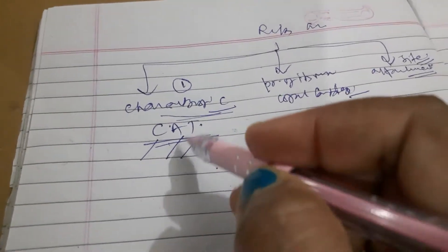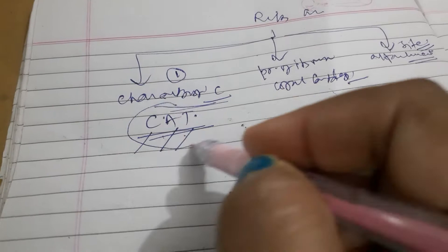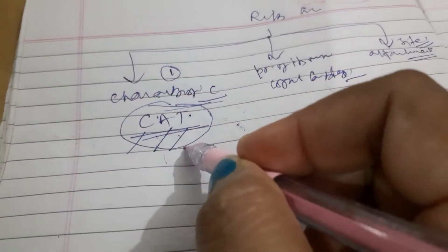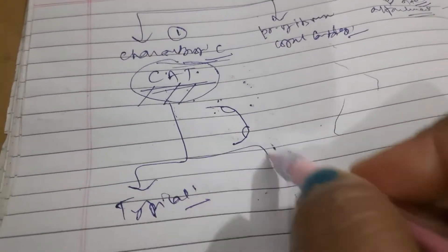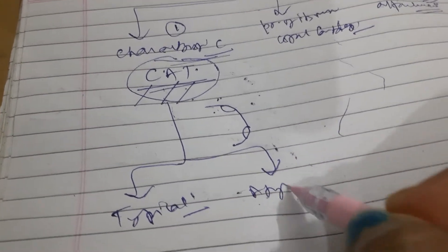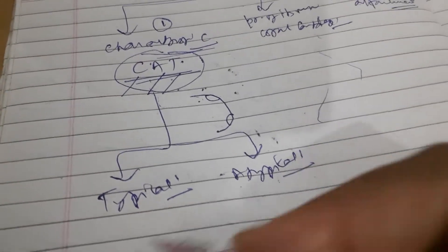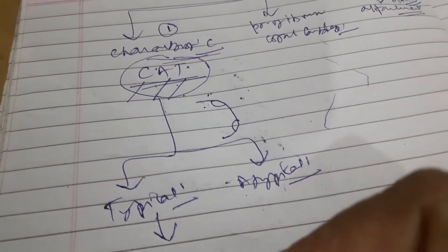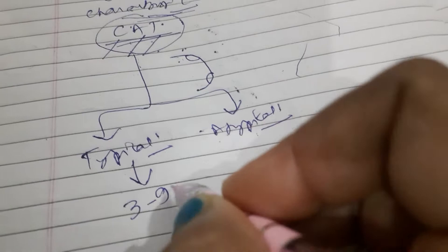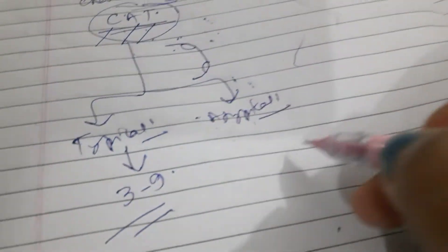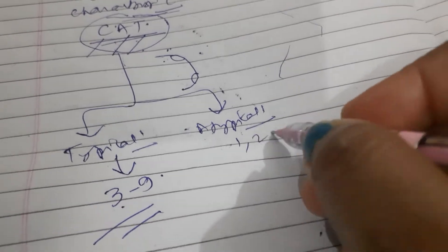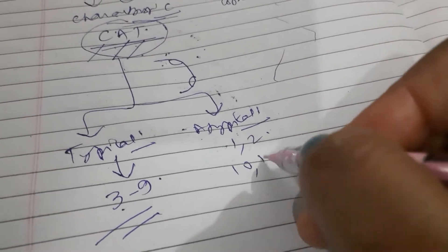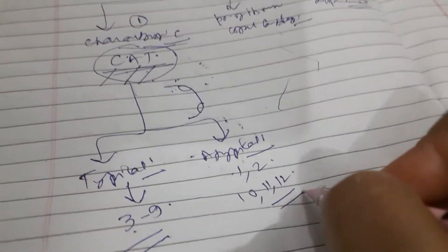These characteristic features are shown by the typical ribs and not shown by the atypical ribs. Typical ribs are the 3rd to 9th, and atypical ribs are the 1st, 2nd, 10th, 11th, and 12th. As we all know, there are twelve pairs of ribs.